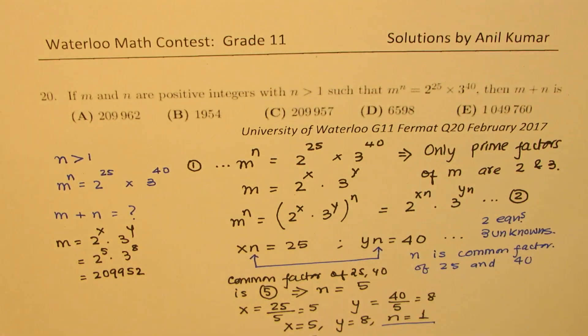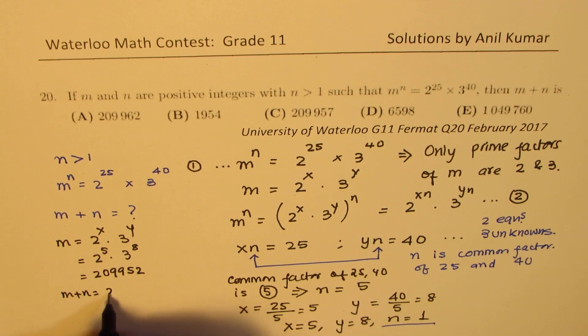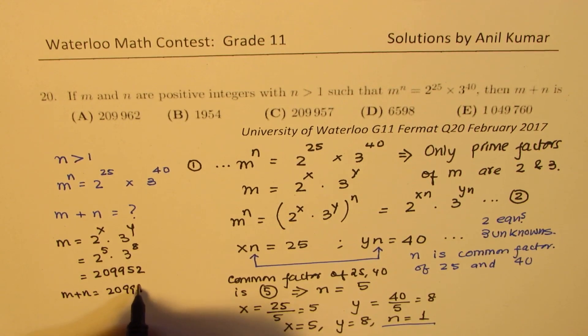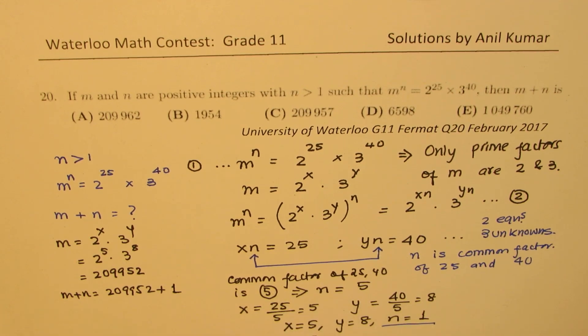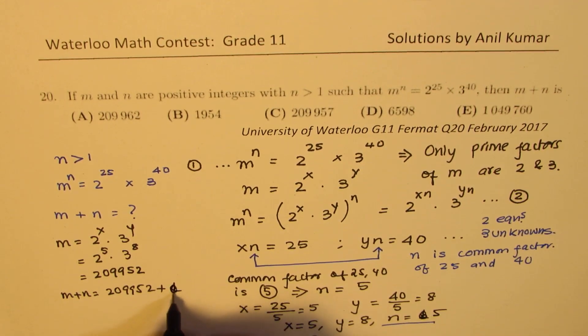Perfect. So that is the value of m. And what is m plus n now? m plus n is 209952 plus the value of n, which was 5.